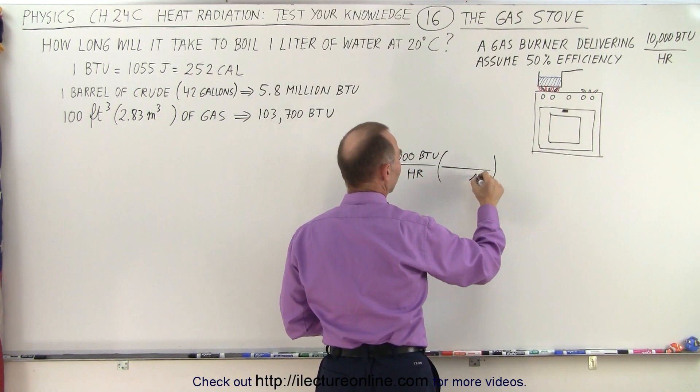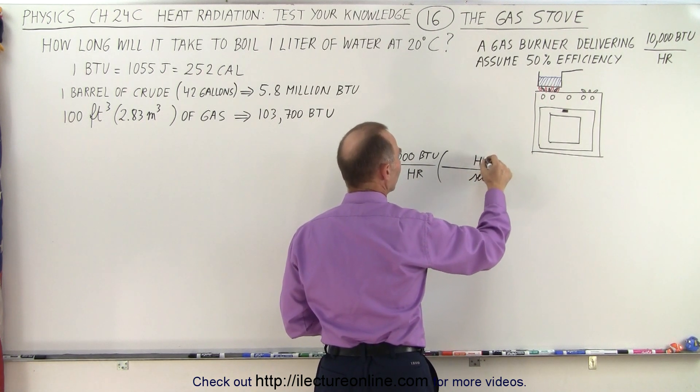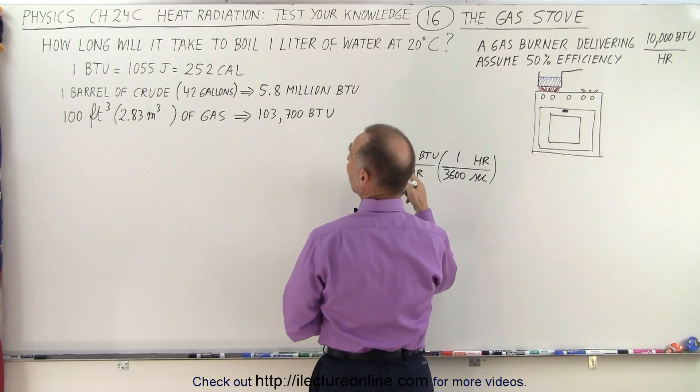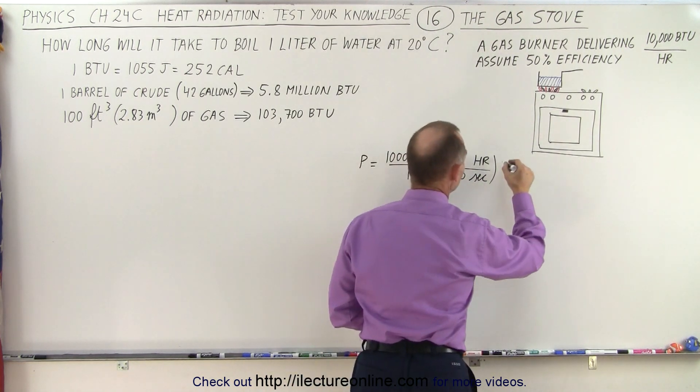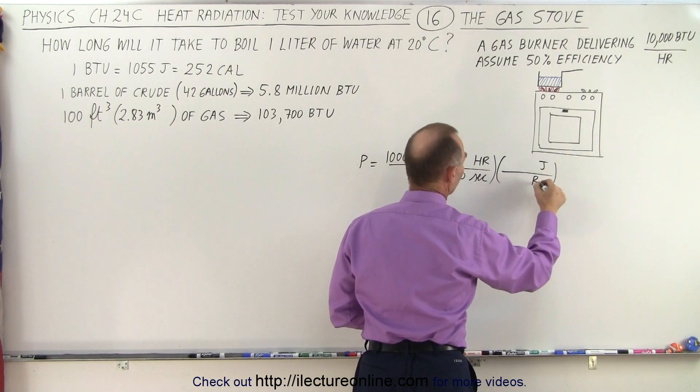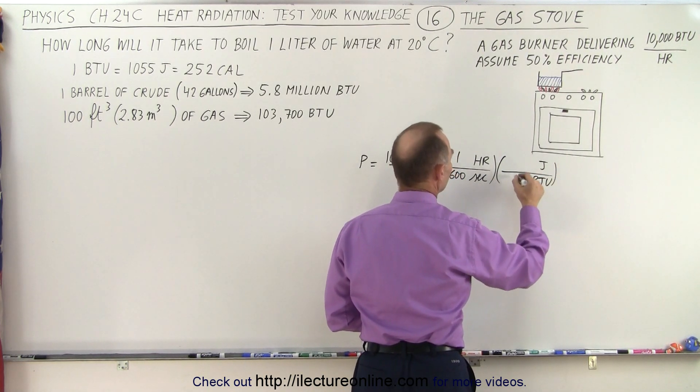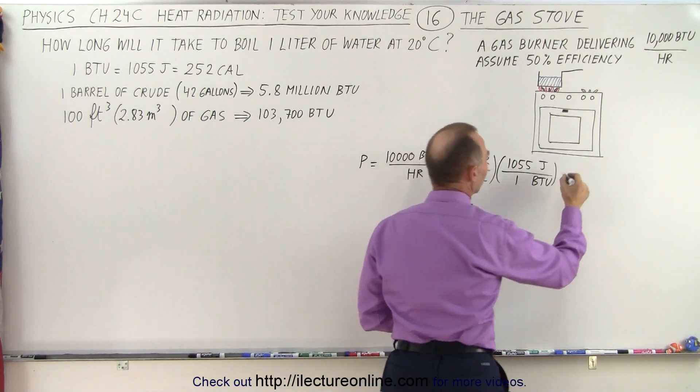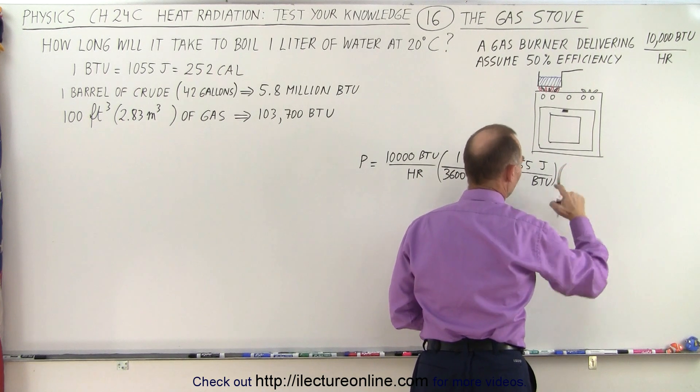Let's see, we want to go to seconds. So, seconds in the bottom, hours at the top, 1 hour is 3,600 seconds. And then we want to convert from BTUs to joules. So, we want joules at the top, BTUs at the bottom. And so, 1 BTU is 1,055 joules. And then we can convert from joules to calories, but I'm going to do that afterwards.